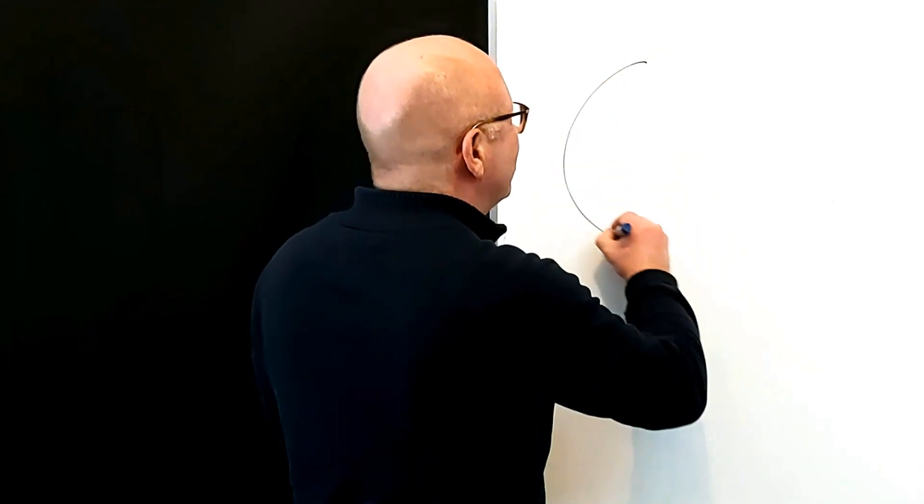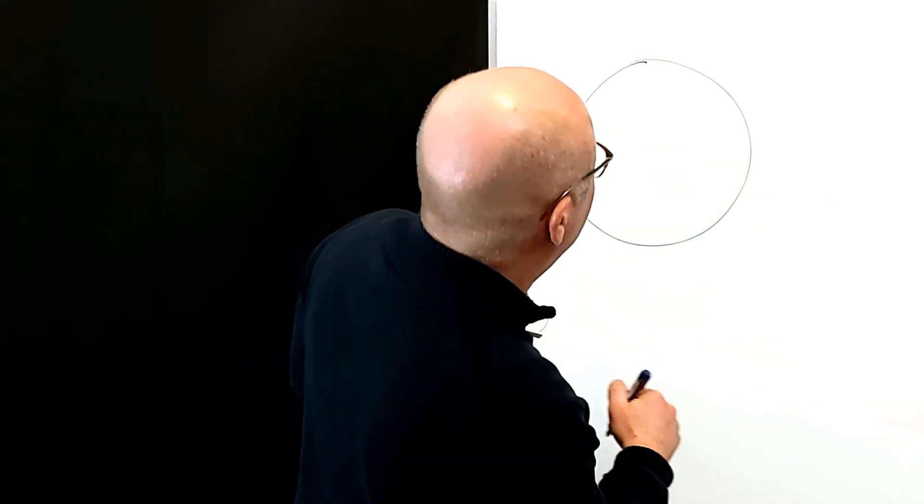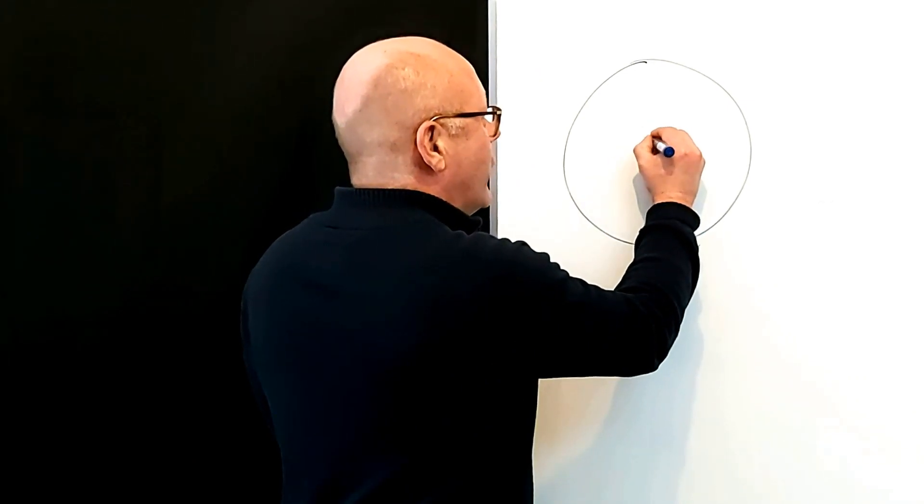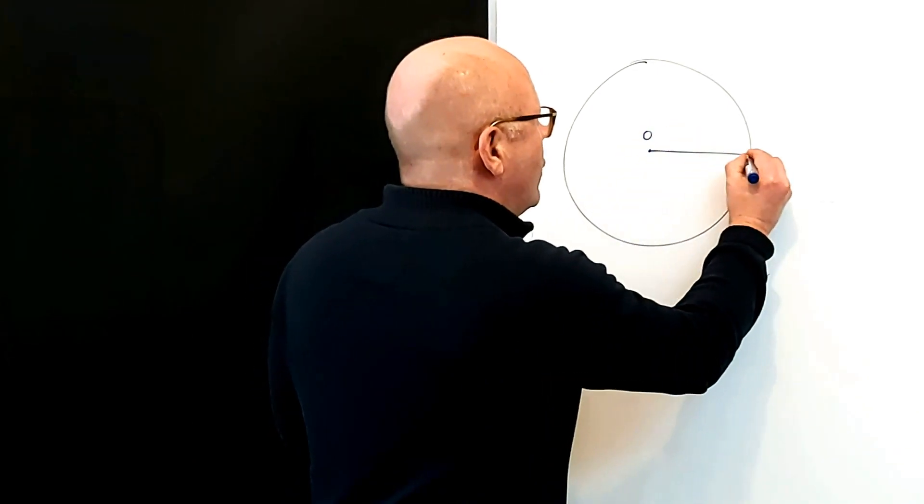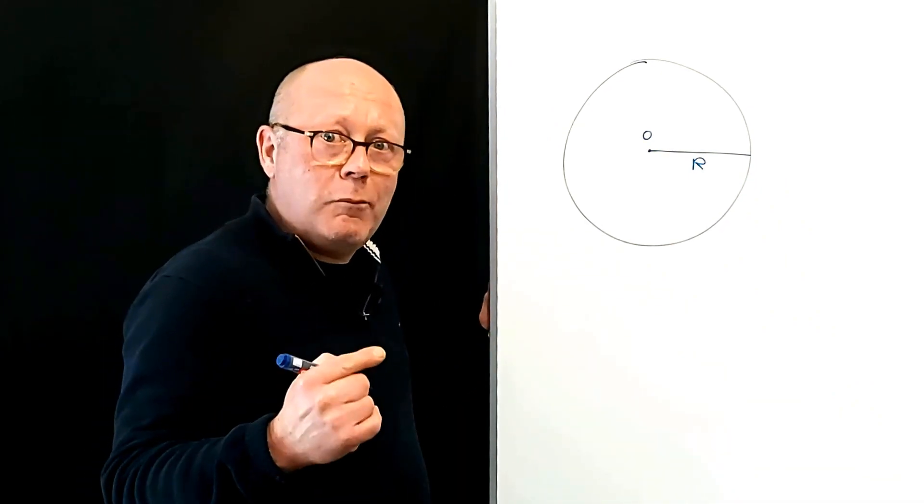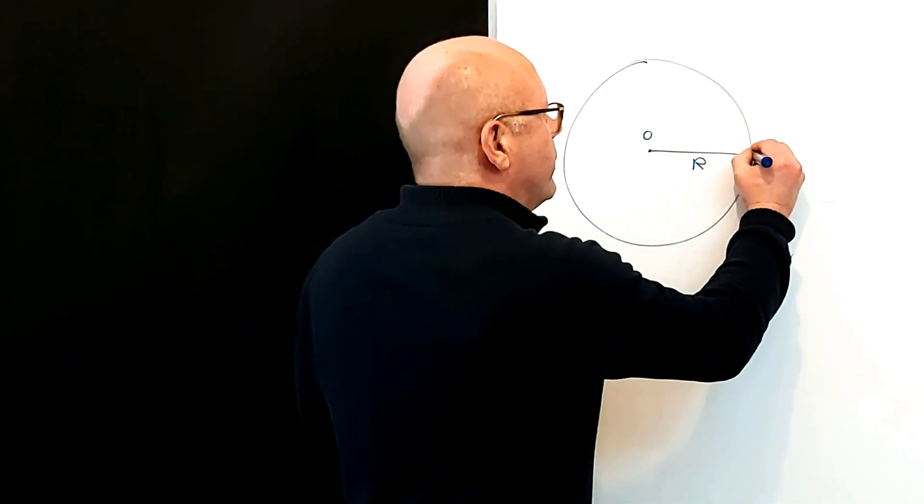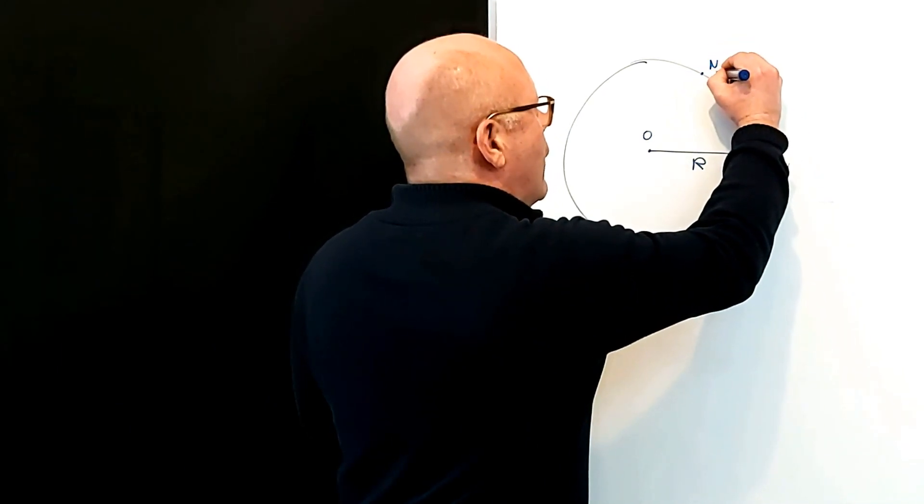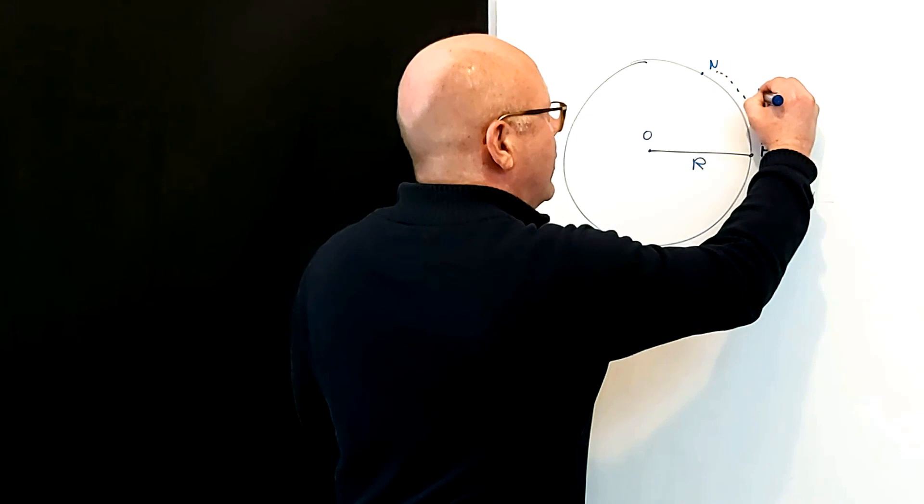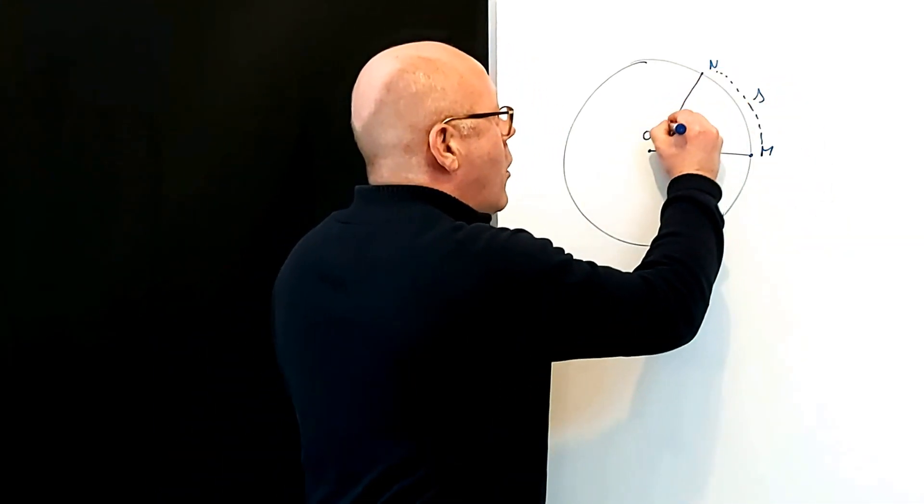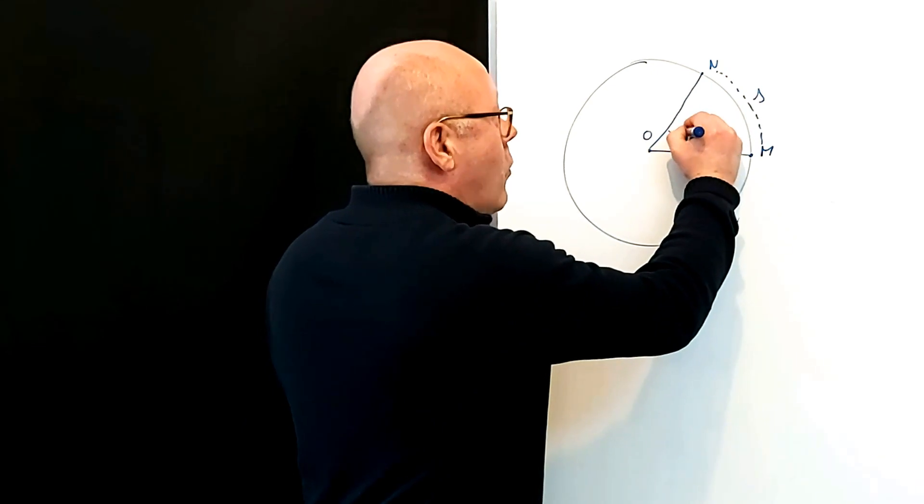Let's start by drawing a circle. A circle centered around point O and a radius R. Let's imagine ourselves putting two points on the circumference, M and N. And these two points form an arc that we can call S. Now you realize that NOM is an angle that we will call θ.